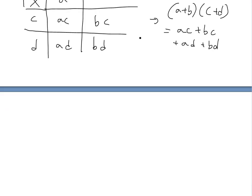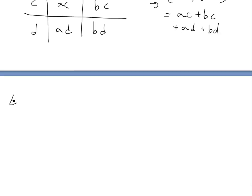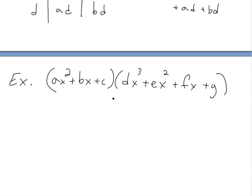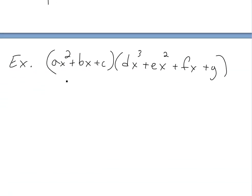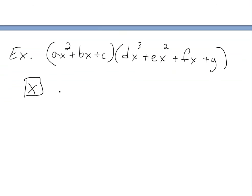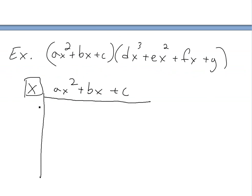Now let's say you have a more complex equation — something like Ax squared plus Bx plus C times Dx cubed plus Ex squared plus Fx plus G. You could FOIL it out, but it's hard to visualize. Instead, let's write it down using this easy table. Put Ax squared, Bx, C along one side and Dx cubed, Ex squared, Fx, G along the other.